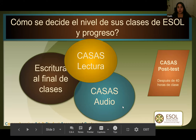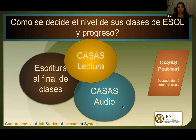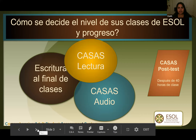Típicamente, determinamos su nivel de inglés cuando toman un examen que se llama CASAS. Desafortunadamente, ahorita no podemos hacer este examen por COVID, por todo lo que está pasando. Entonces, para determinar su nivel de inglés, yo les voy a hacer unas preguntas y ustedes pueden determinar por sí mismos en qué nivel sería más apropiado para ustedes.